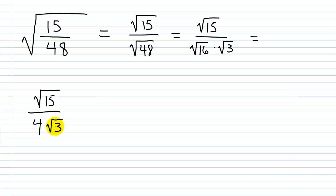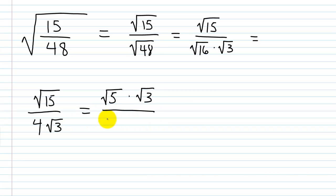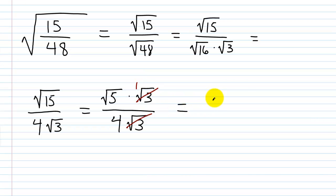You've got to train your brain to look for these things. I can break the square root of 15 down and write it as the square root of 5 times the square root of 3. Down in the denominator I have 4 times the square root of 3. Square root of 3 over square root of 3 is 1 — any non-zero number over itself is always 1 — so those cancel, and I'm left with the square root of 5 over 4.